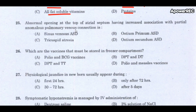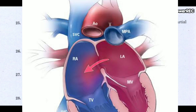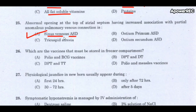Next question: abnormal opening at the top of the atrial septum having increased association with partial anomalous pulmonary venous connection is sinus venosus ASD (atrial septal defect). Five percent of ASDs are associated with sinus venosus type, occurring near the superior or inferior vena cava.